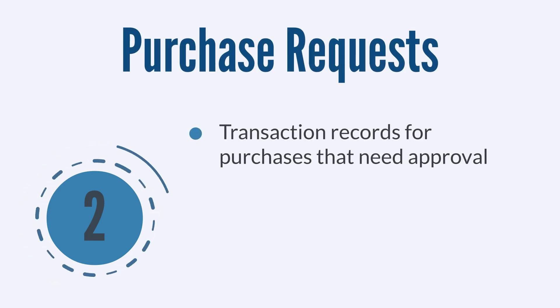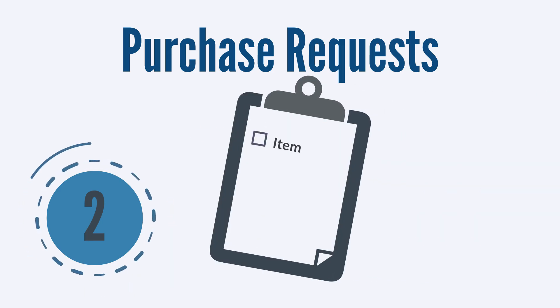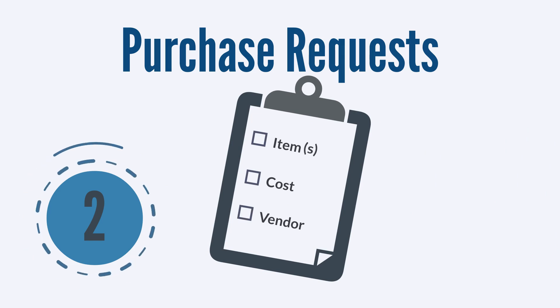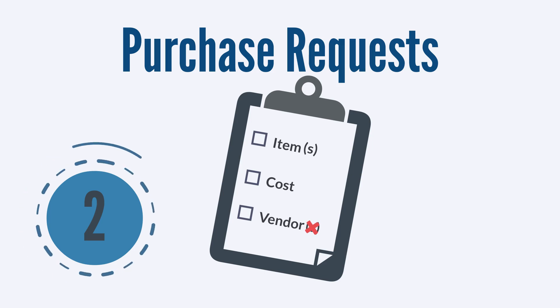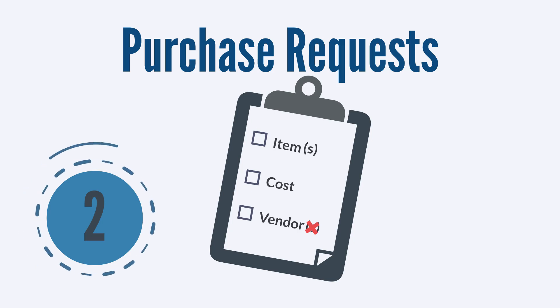Let's get a big picture overview of purchase requests. Purchase requests are transaction records for any purchases that would require approval before the purchase order can be created. A purchase request record contains all the relevant details about the pending purchase, including the item that would be purchased, the expected cost, and the vendor. A single purchase request can include multiple items, but it cannot include multiple vendors. This restriction is reasonable, considering that purchase requests will naturally convert into purchase orders — after all, you wouldn't send the same purchase order to multiple vendors.